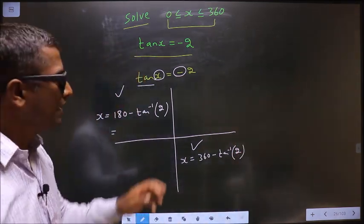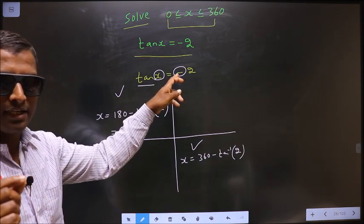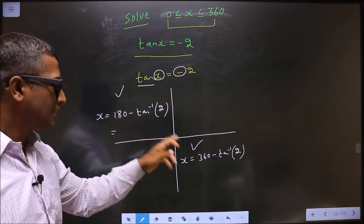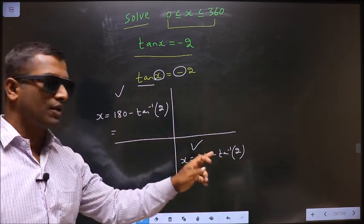Remember this. The negative sign is only for selecting the quadrants. Once the quadrants are selected, do not put the negative sign.